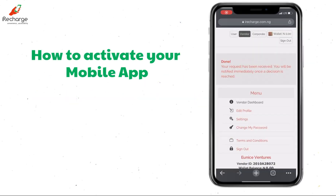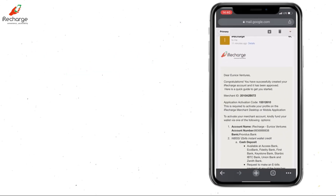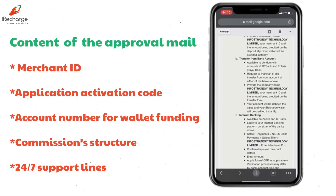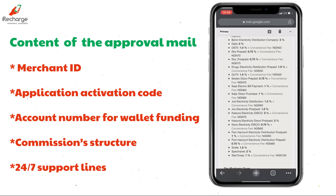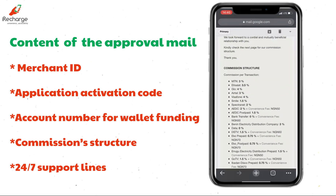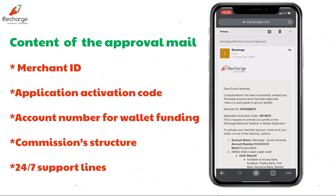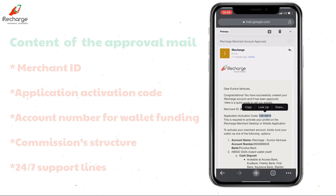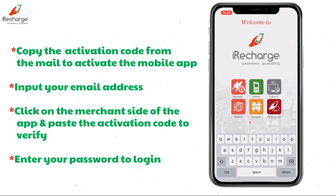Step 1: How to activate your mobile app. Kindly go back to the approval mail that was sent to you. This mail contains your application activation code, account number to fund your wallet, the commission structure, and the customer support lines. To activate your mobile app, simply copy the activation code and open the iRecharge mobile app.